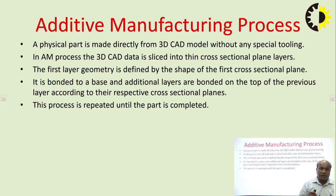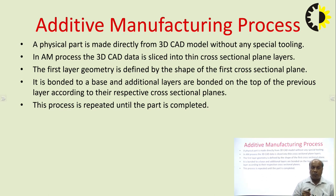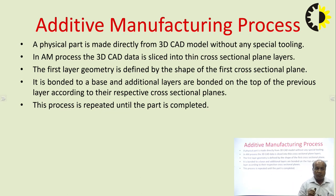There are different types of additive manufacturing processes available. A physical part is made directly from a 3D CAD model without any special tooling. The 3D CAD data is sliced into thin cross-sectional layer plans. The first layer geometry is defined by the shape of the first cross-section. Additional layers are bonded on top of the previous layer according to their respective cross-sections. This process is repeated until the final part is completed.